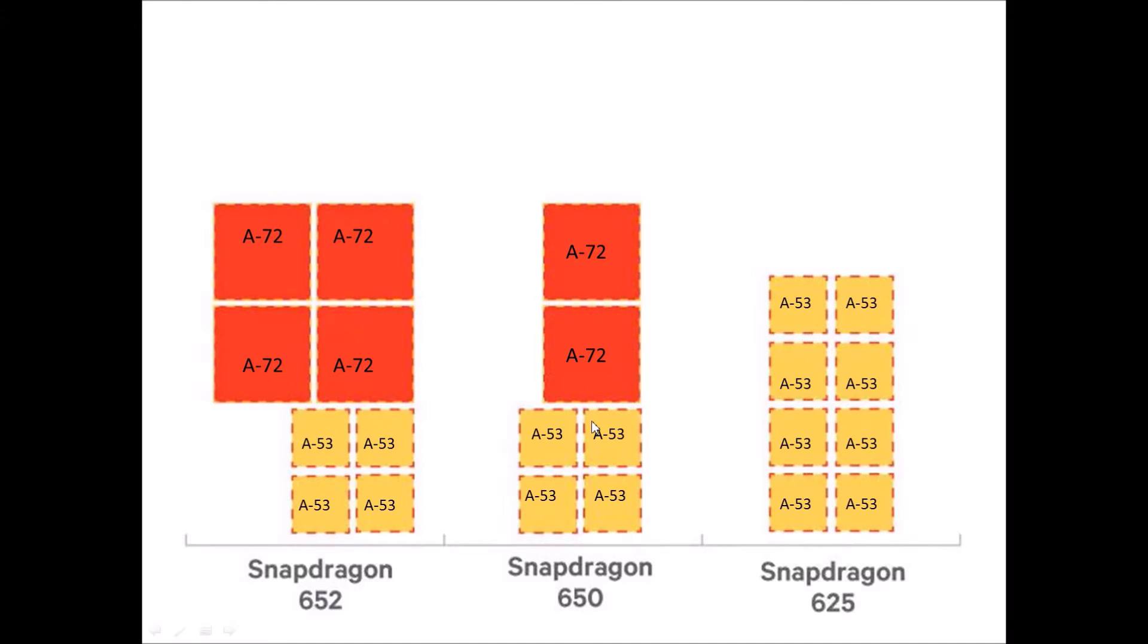Whereas Snapdragon 652 is an octa-core processor with four cores clocked at 1.4 GHz based on ARM Cortex-A53. As these are low-powered cores, they are used for less CPU intensive tasks. The other four cores are clocked at 1.8 GHz and are based on ARM Cortex-A72.